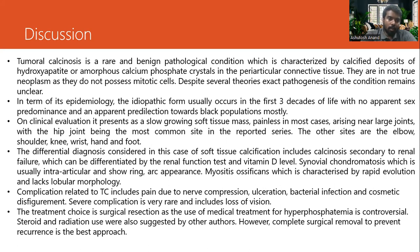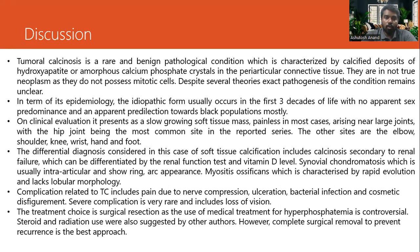In terms of its epidemiology, the idiopathic form usually occurs in the first three decades of life with no apparent sex predominance and an apparent predilection towards the Black population. On clinical evaluation, it presents as a slow-growing soft tissue mass, painless in most cases, arising near large joints, with the hip joint being the most common site in reported series.